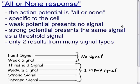And so there are only two results from many different signal types. This is essentially a digital system—it's either on or it's off.